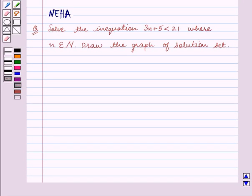Hello and welcome to the session. In this session we will discuss the following question: Solve the inequality 3n plus 5 is less than 21 where n belongs to the set of natural numbers. Draw the graph of solution set.